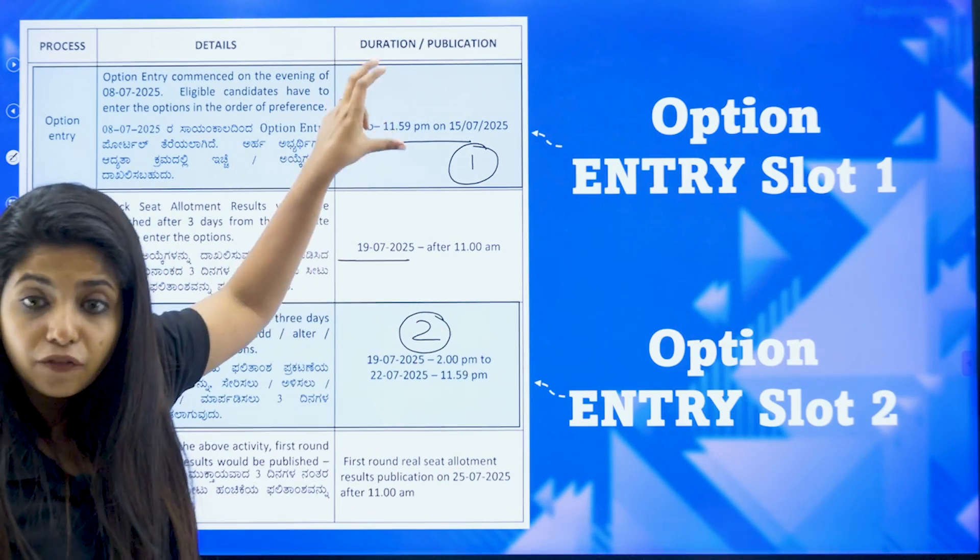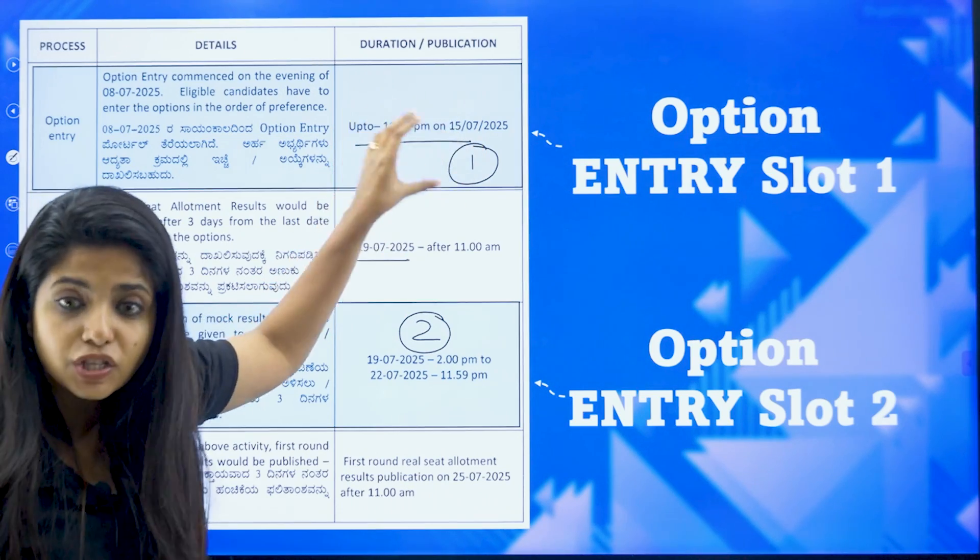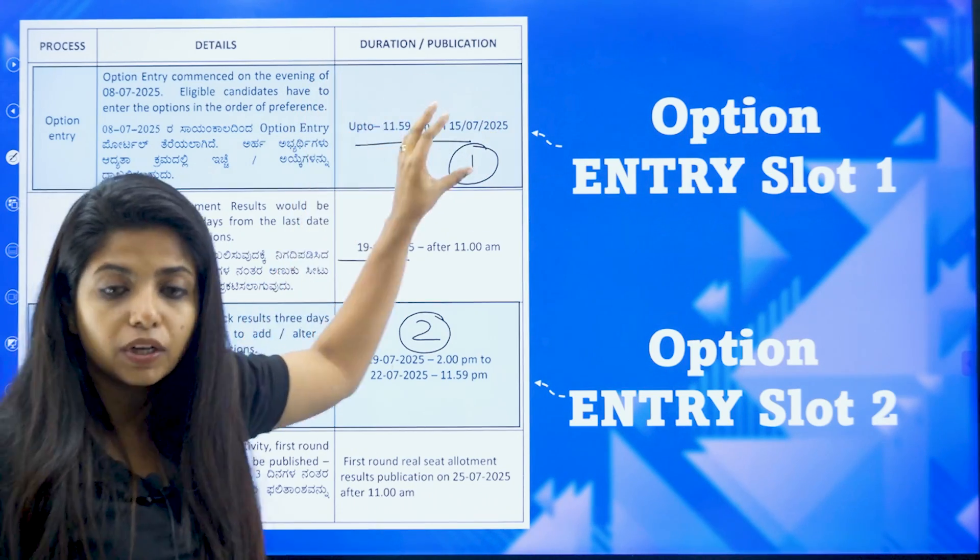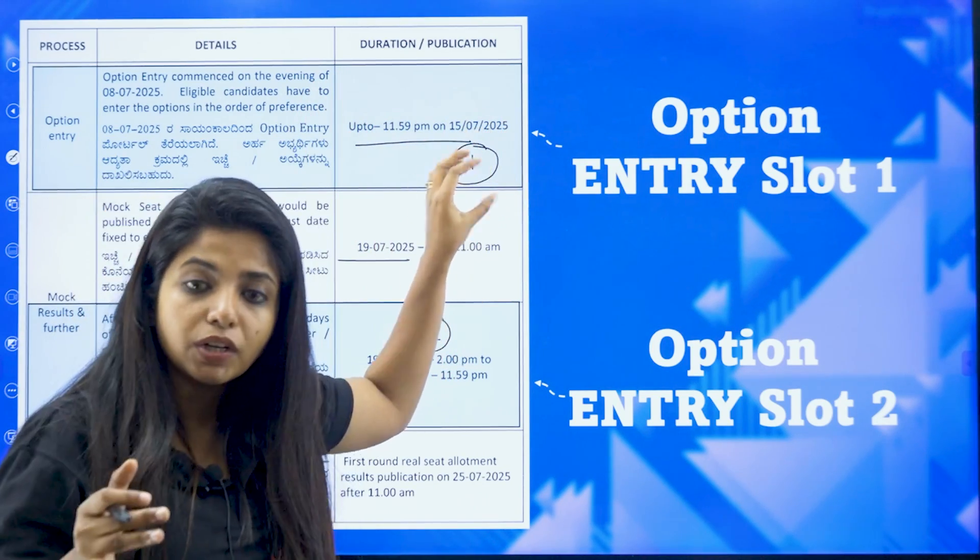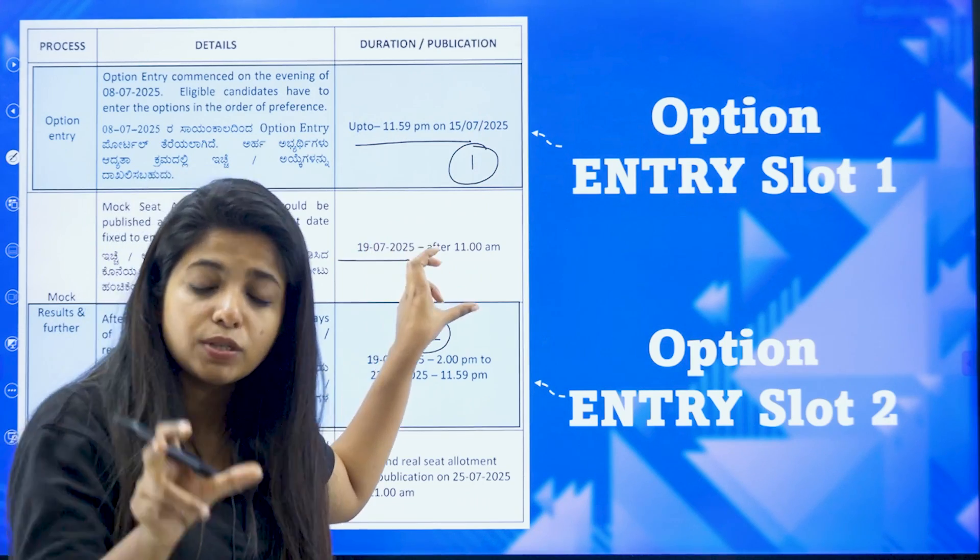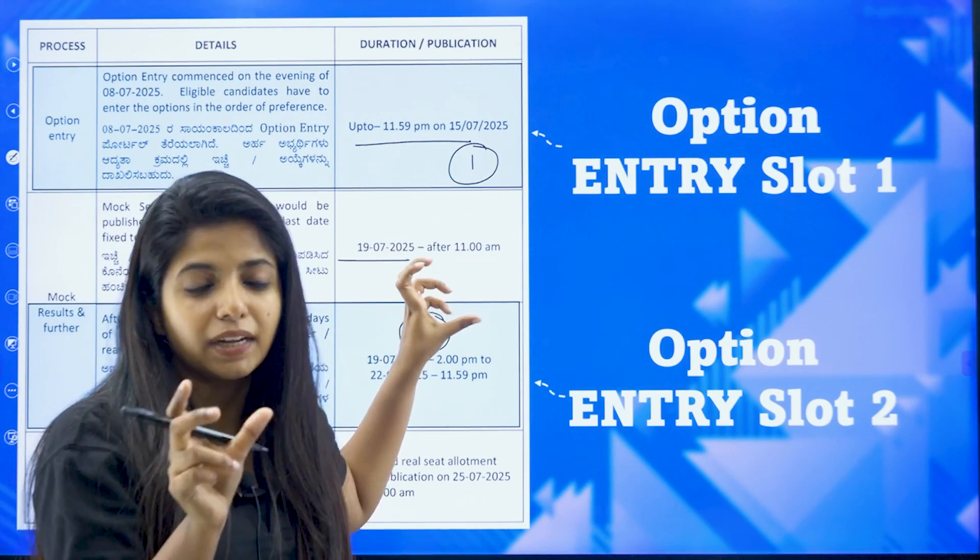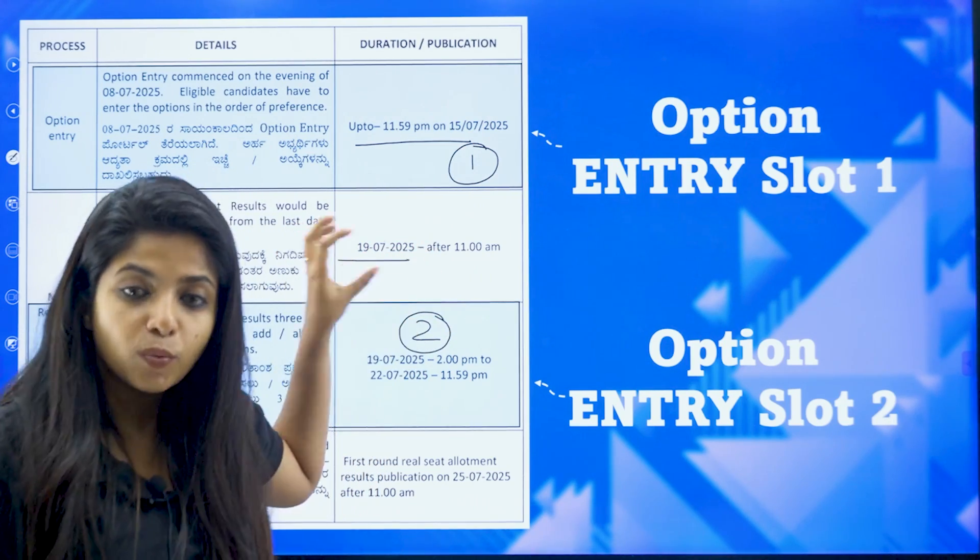So you get the next chance for option entry. So the last date for this option entry is 15th. Based on that, please utilize this particular time period. Please put in the actual data. You will get to know the chances of you getting one particular college out there.